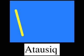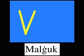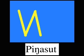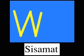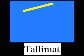The first number is Atasyaq. It is represented by a slanted vertical line. The second number is Malagop, which is represented by two slanted vertical lines. The third number is Pingasut, shown by three slanted vertical lines. The fourth number is Sisamut, shown by four slanted vertical lines.